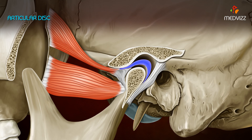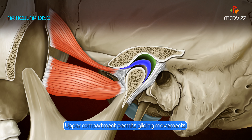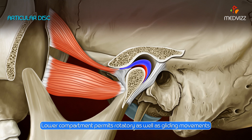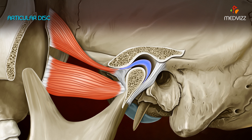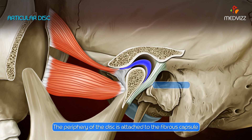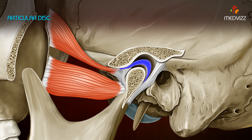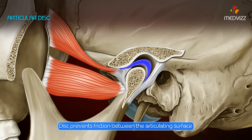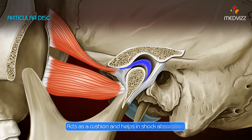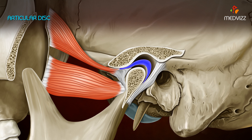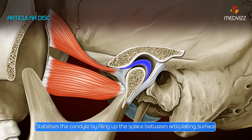The articular disc is an oval, predominantly fibrous plate which divides the joint into upper and lower compartments. The upper compartment permits gliding movements, while the lower compartment is responsible for rotatory and gliding movements. The disc has a concavo-convex superior surface and a concave inferior surface. Its periphery is attached to the fibrous capsule. The disc prevents friction between articular surfaces, acts as a cushion for shock absorption, and stabilizes the condyle by filling the space between the articular surfaces.